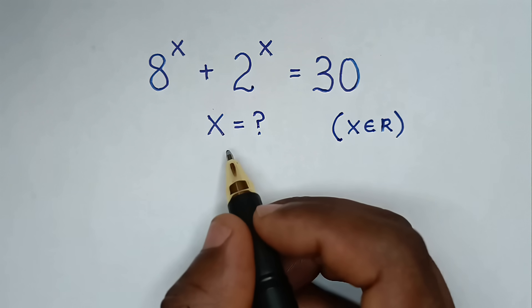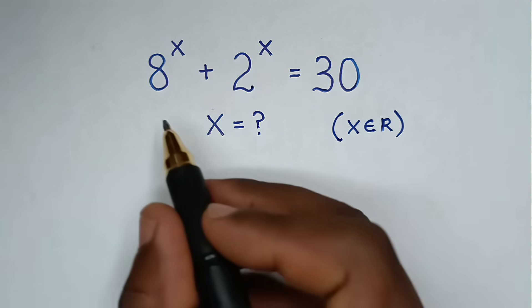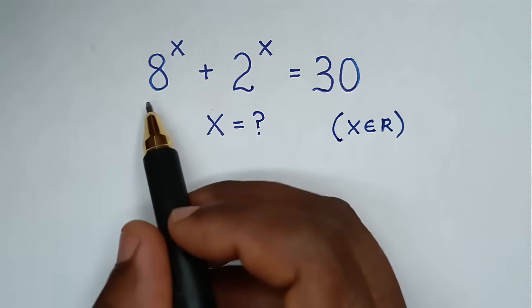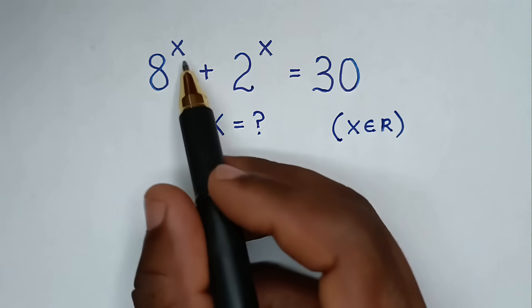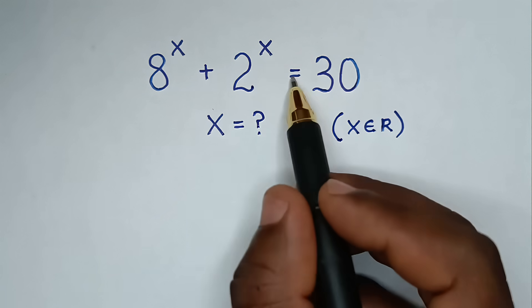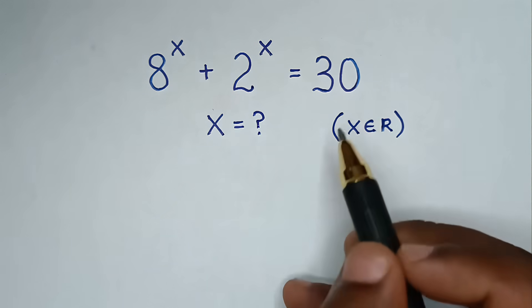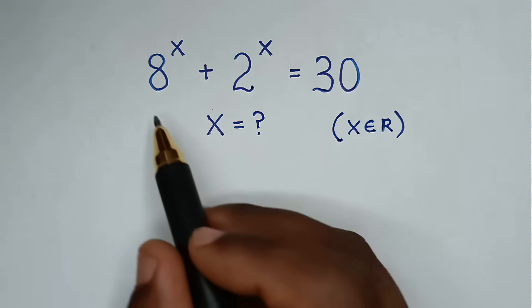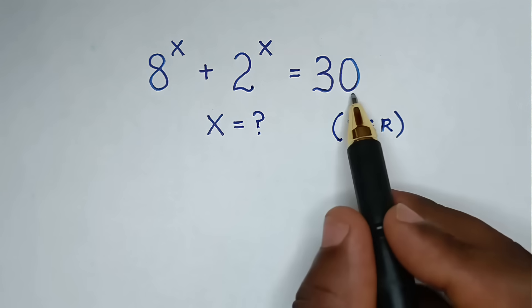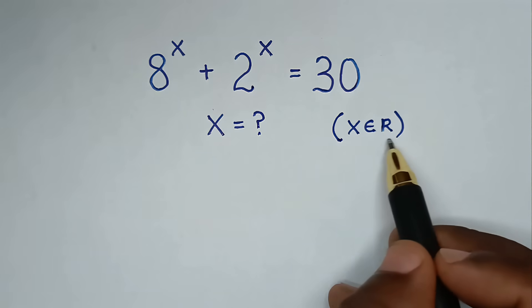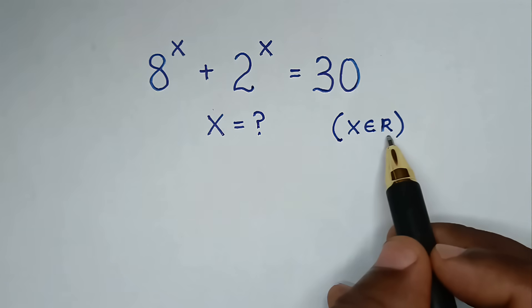Hello. You are welcome to solve this math problem, which is 8^x + 2^x = 30, to find the value of x from this equation such that x is an element of the real numbers.